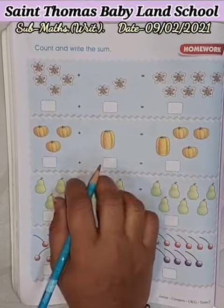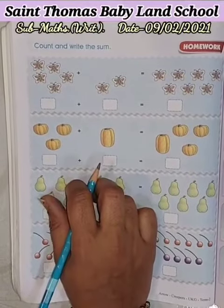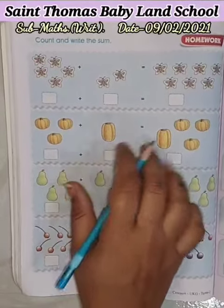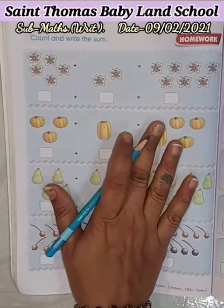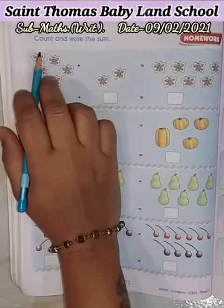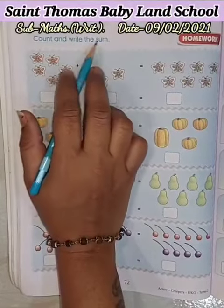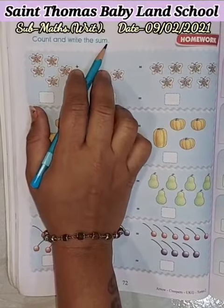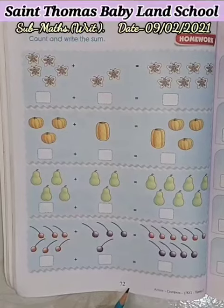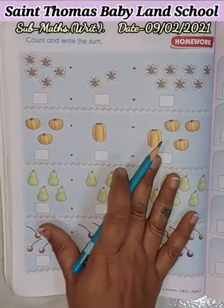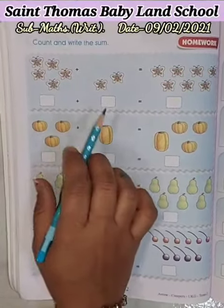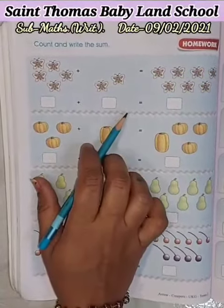Good morning children. Today I come back with a maths written subject. Today we continue our topic count and write the sum in page number 7 to 72. Today also we have to count then write the sum.